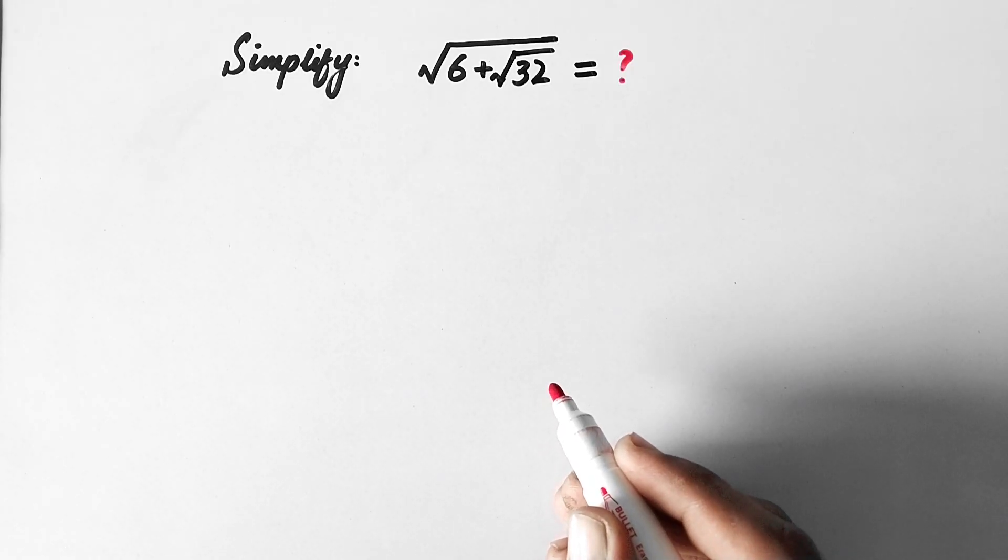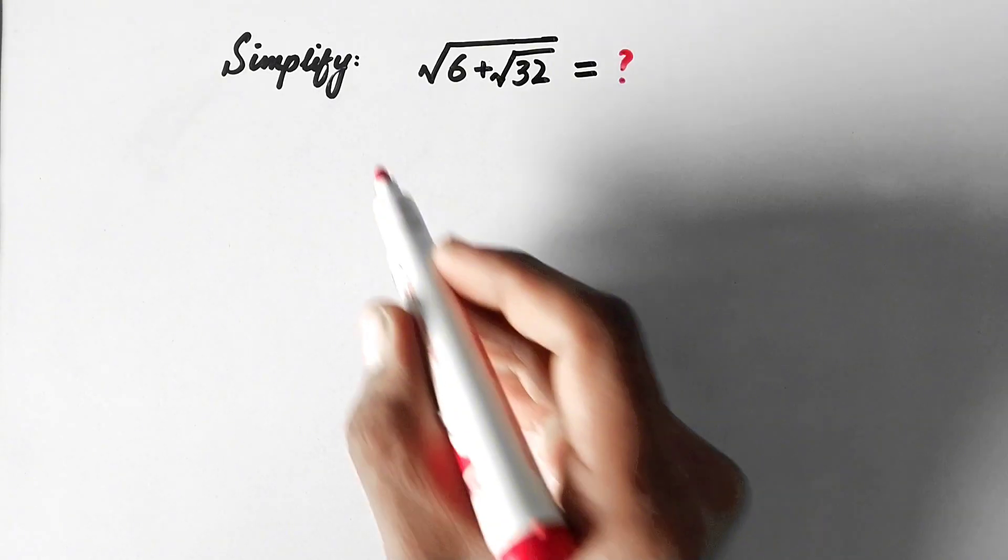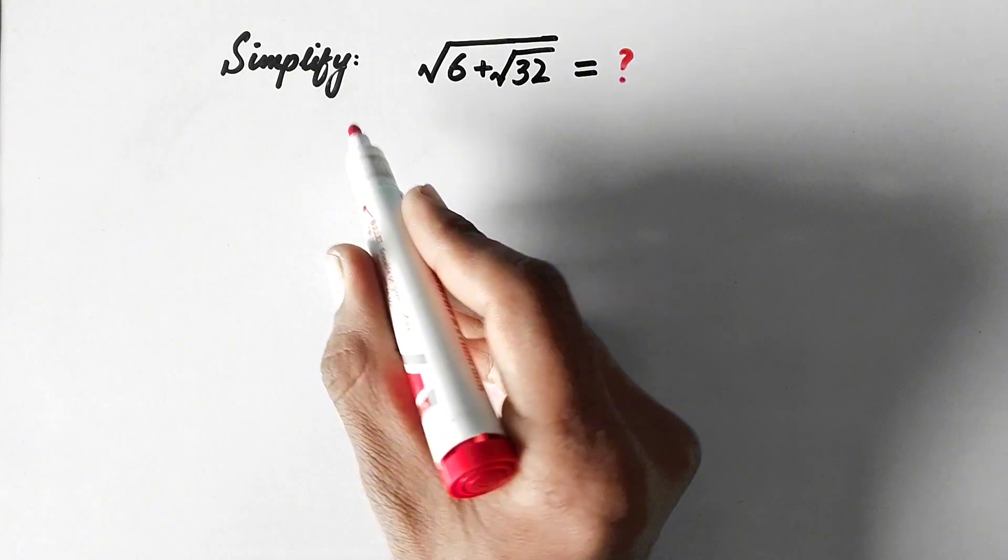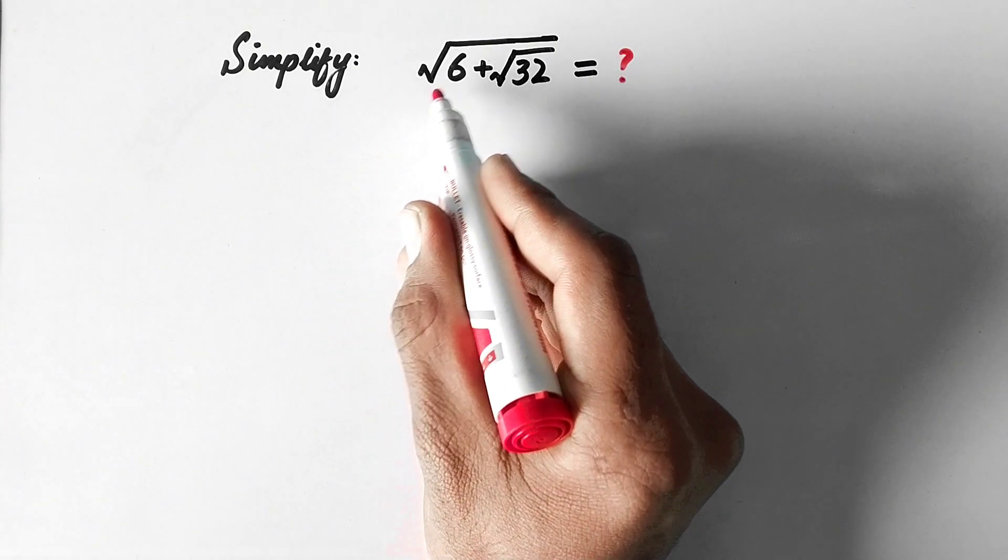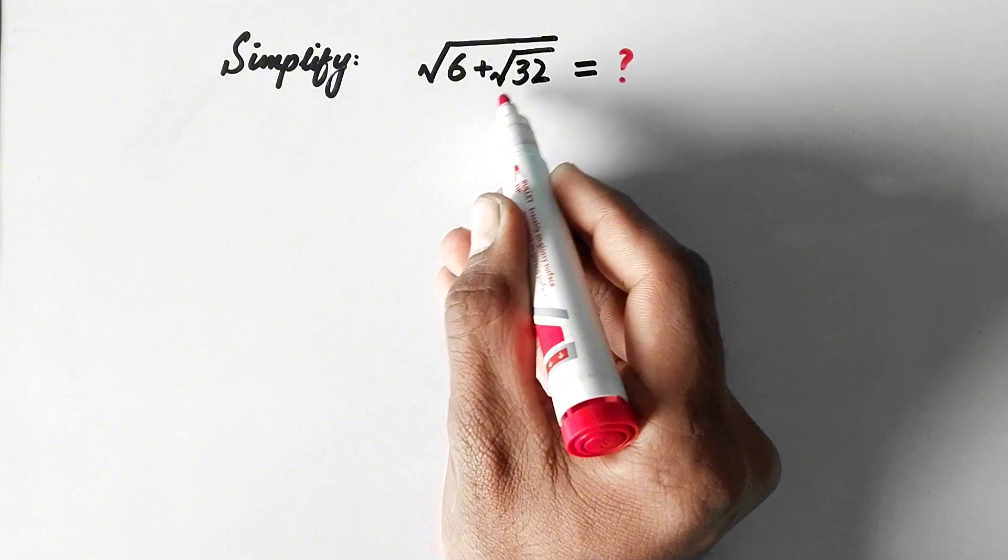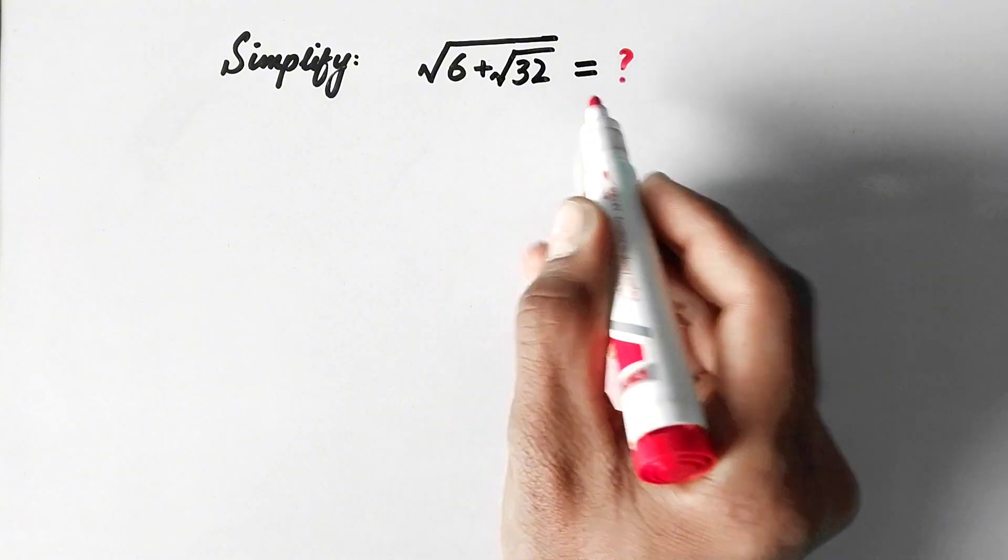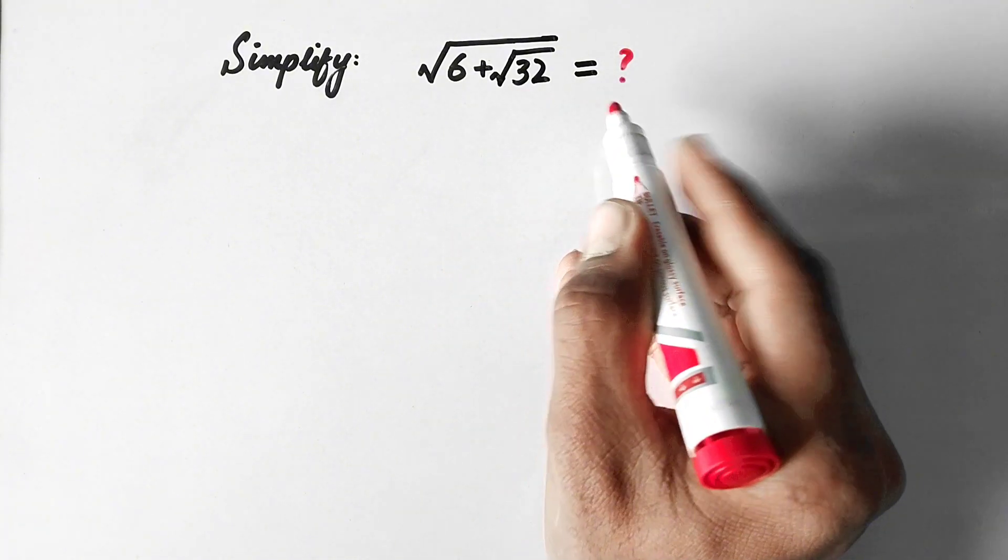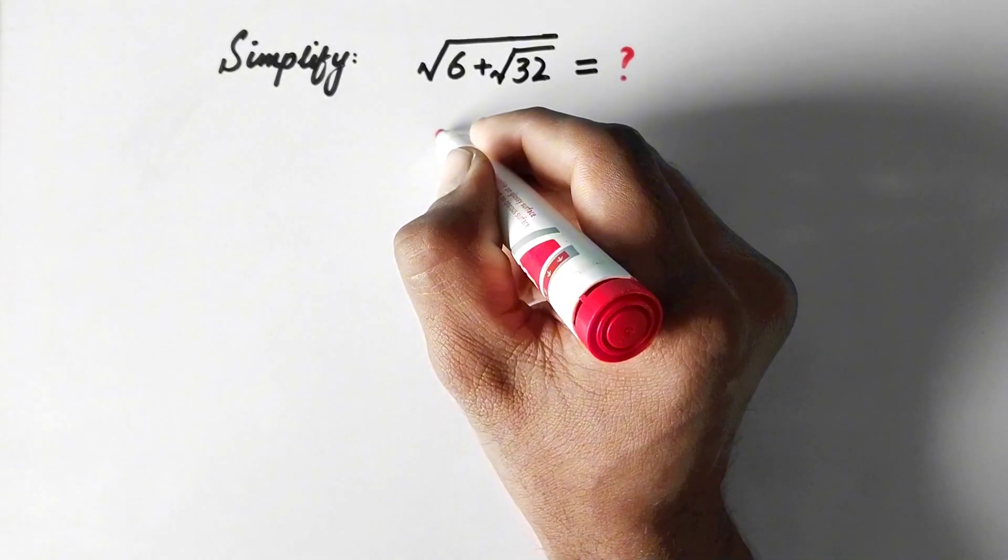Hello everyone and welcome to Explore Maths. In this video we are going to simplify √6 + √32. Let us see its step-by-step solution.